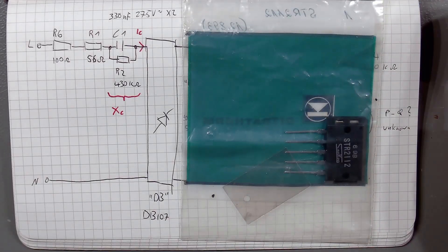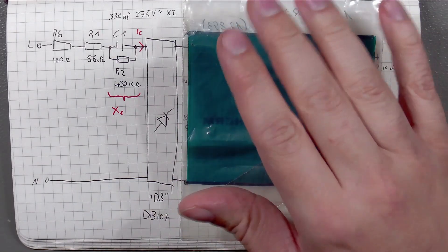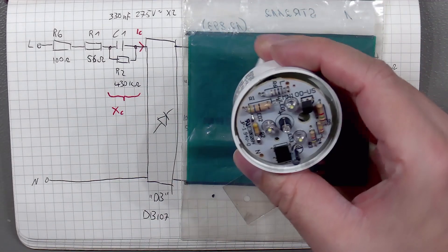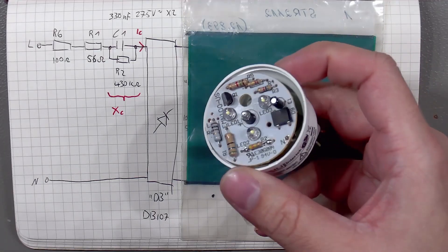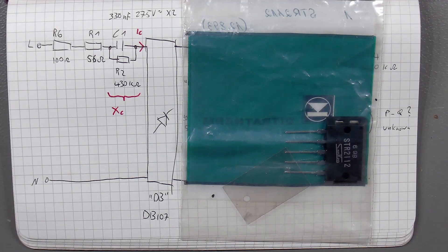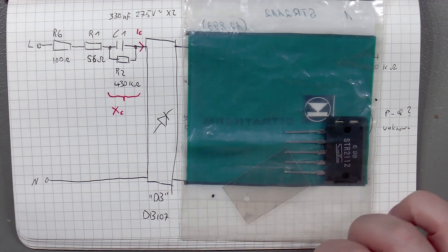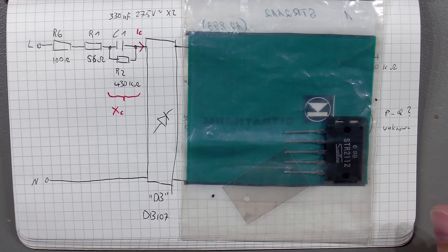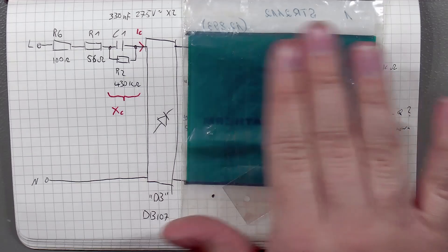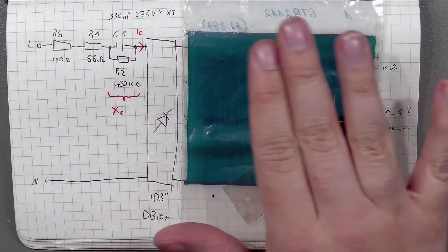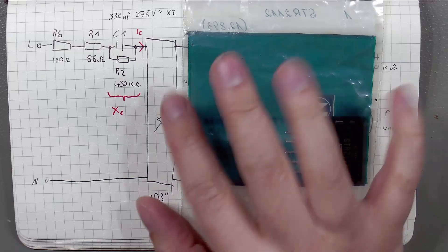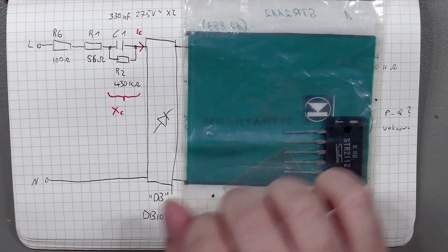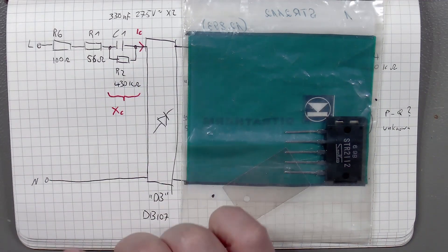I have drawn out the schematic for this nightlight thing and I have to say I am very much not impressed at all. Let's take a look at it. We start strong with a usual capacitive dropper using that big yellow capacitor underneath.